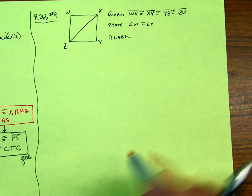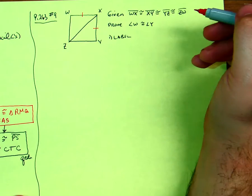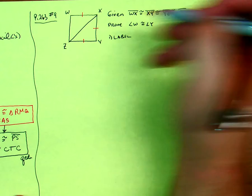We're given a bunch of congruent segments in this case. WX is congruent to XY, which is congruent to YZ, which is congruent to ZW.